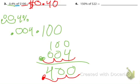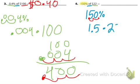On to number 4. We're looking for 150% of 22. So 150%, change it to a decimal, move it over twice. So we get 1.5 times 22.